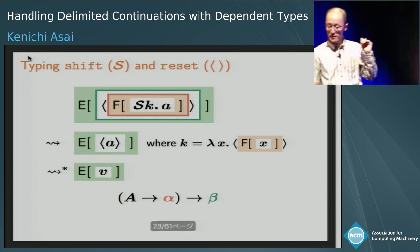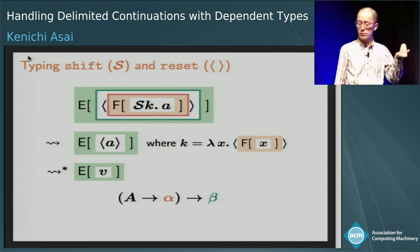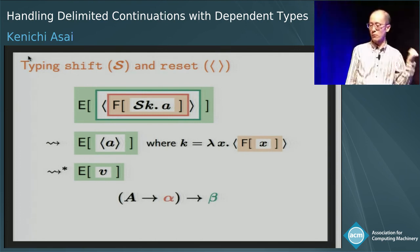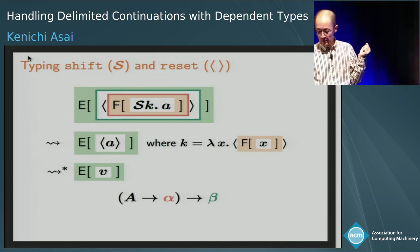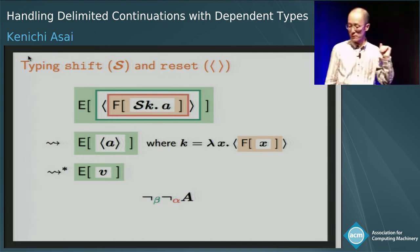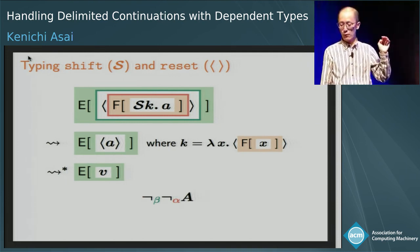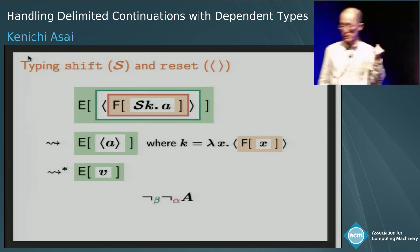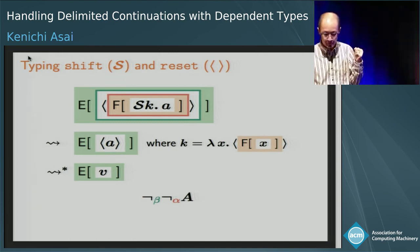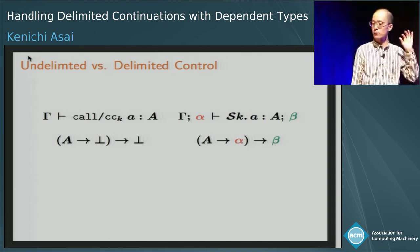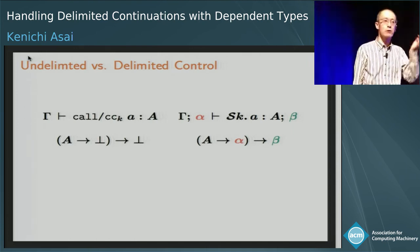In CPS, the shift expression receives an alpha-returning continuation and returns the final value of type beta. Logically, if we use the generalized form of negation, it can be written where two occurrences of empty types are replaced by two answer types, alpha and beta. So if we use delimited control, we have two additional answer types, and this gives rise to two new type dependencies.